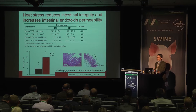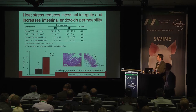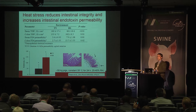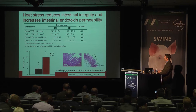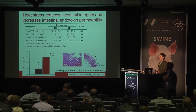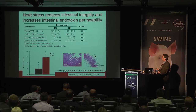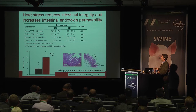Endotoxin is also highly associated with heat stress, and our group has been actively looking at this for about five years in collaboration with Dr. Lance Baumgard at Iowa State. Looking at 50 kg pigs under 24-hour constant heat stress, circulating serum endotoxin is significantly increased after 24 hours — the same at 12 hours and 6 hours. This is associated with increased permeability to FITC-dextran (a 4.4 kilodalton macromolecule), showing heat stress causes a significant increase in small intestinal permeability.